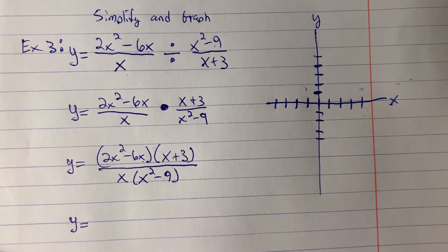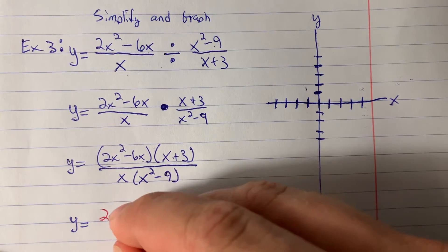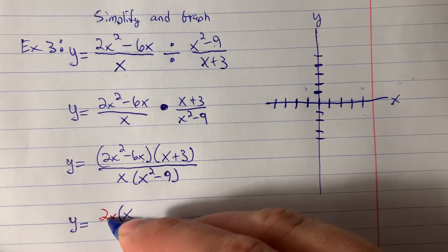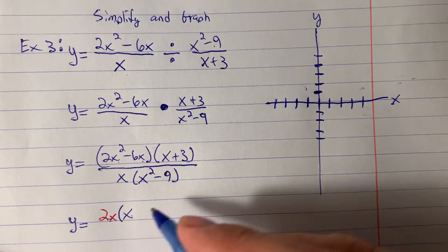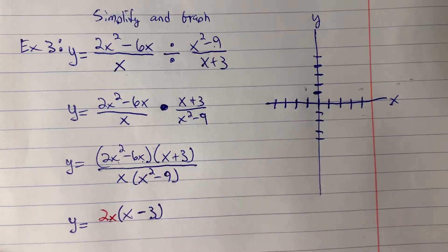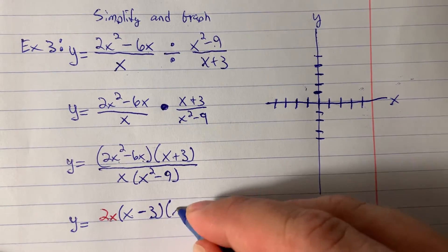And so I'm going to go ahead and factor out 2x. And so 2x times x gives me 2x squared, and 2x times negative 3 gives me negative 6x. This is linear and cannot be factored.